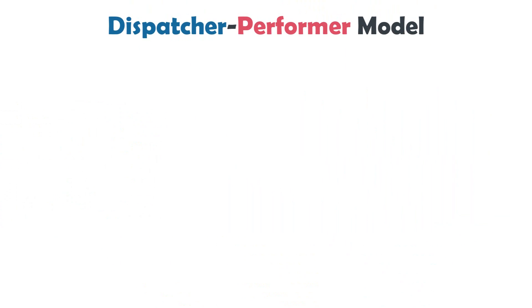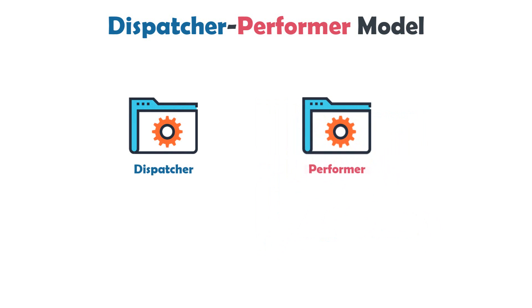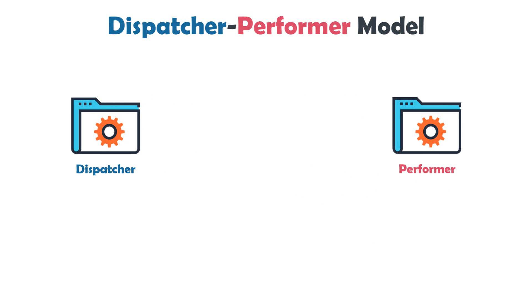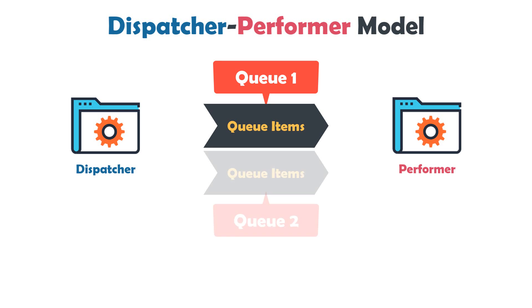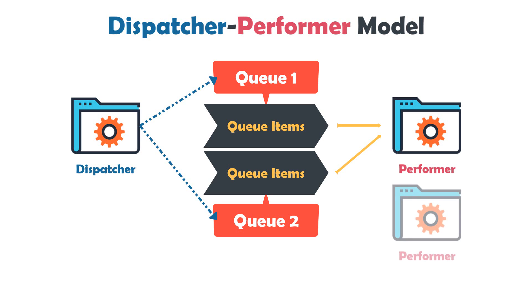In the dispatcher-performer model, there is the possibility to have more than one performer process. This means we can run the same performer process on several machines. Each performer can use the queue items which are created from the dispatcher process. We can also use more than one queue — the dispatcher can create queue items in more than one queue, and the performer process can then get the items from the different queues. Or we can also use more than one performer process, where each process gets the queue items from one of the different queues.